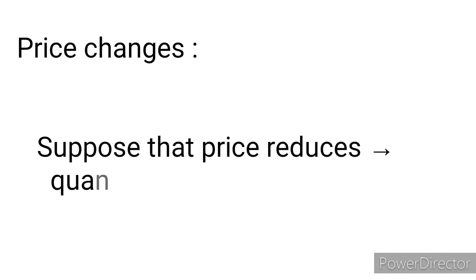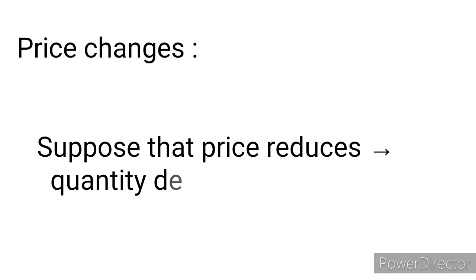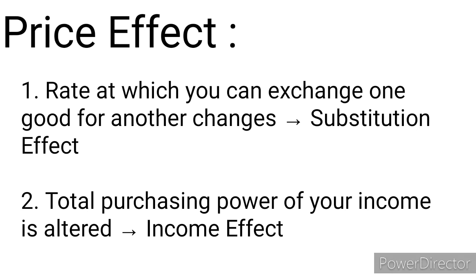Whenever the price of a good changes — suppose it becomes cheaper, the price of a good decreases — what happens? The quantity demanded will increase. We know the law of demand that whenever the price decreases, the quantity demanded increases. But why does that happen? Whenever the price of a good changes, there are two sorts of effects. First one is substitution effect and second one is income effect.